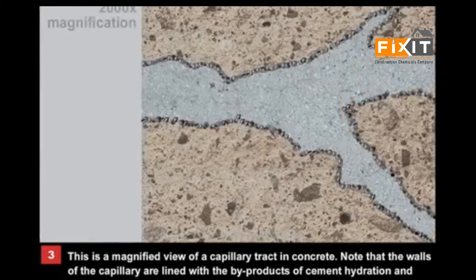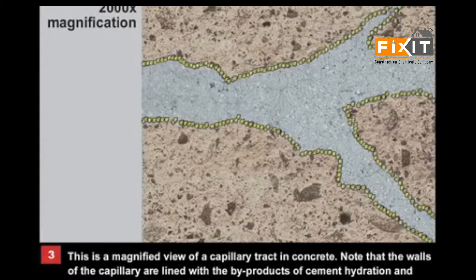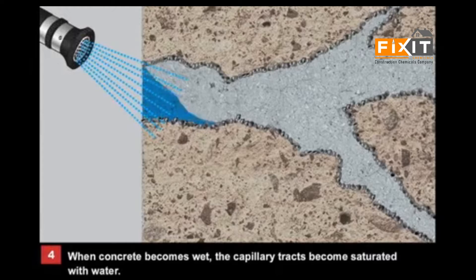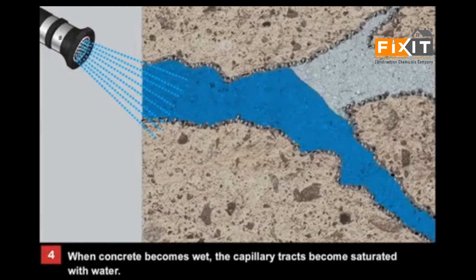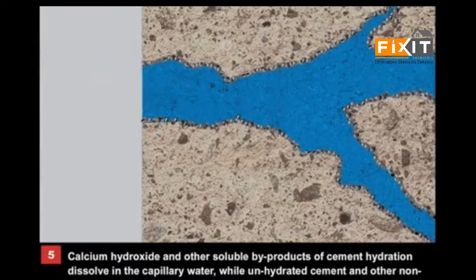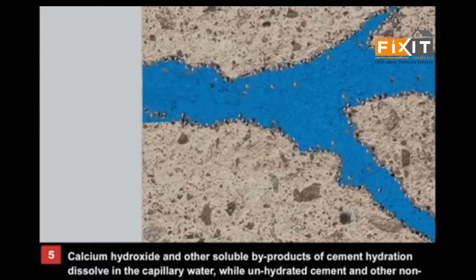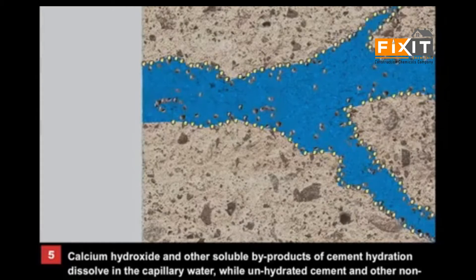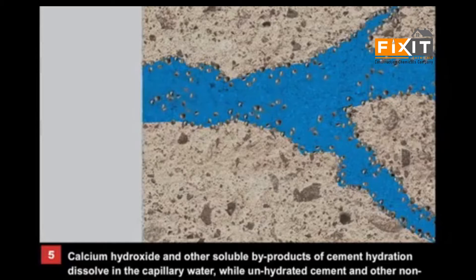This is a magnified view of a capillary tract in concrete. Note that the walls of the capillary are lined with the byproducts of cement hydration and unhydrated cement particles. When concrete is wet, the capillary tracts become saturated with water. Calcium hydroxide and other soluble byproducts of cement hydration dissolve in the capillary water, while unhydrated cement and other non-soluble materials remain on the walls.